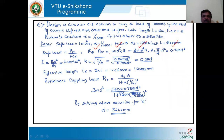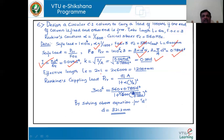The crippling load is PCR by factor of safety, giving 3 into 10 to the power of 6 Newtons. Since we need to design and find the diameter, we keep all values in terms of D. Area for a solid circular cylinder is pi D squared by 4, and I is equal to pi D to the power 4 by 64. The radius of gyration k equals square root of I by A; substituting gives the value in terms of D. Effective length is twice the actual length since one end is fixed and the other is free, giving 12,000 millimeters.